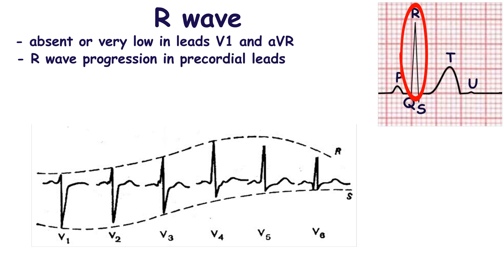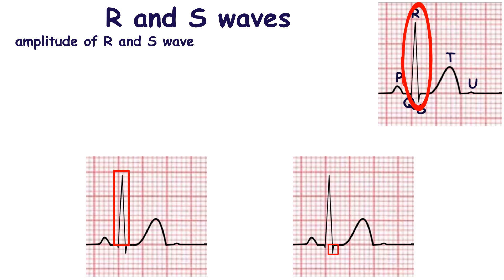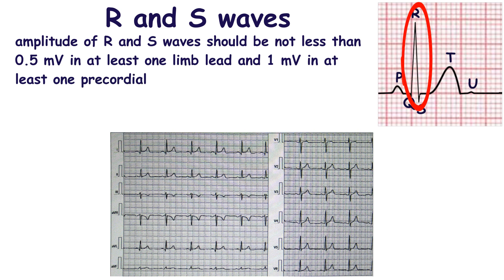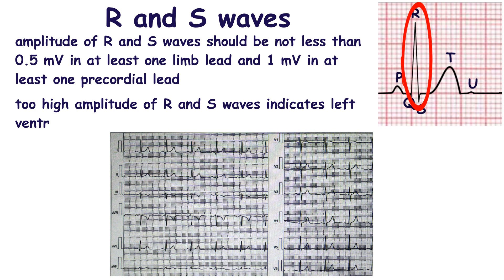Normally, there is R wave progression in the precordial leads. The amplitude of R and S waves should not be less than 0.5 mV in at least one limb lead and 1 mV in at least one precordial lead. Too high amplitude of the R wave indicates ventricular hypertrophy, but it may be found in healthy young athletic people and people over 40 years old. The amplitude of the R wave should not exceed 2 mV in all limb leads and 1.1 mV in AVL. The R wave should not be higher than the S wave in lead V1. The sum of the amplitude of the S wave in V1 and the amplitude of the R wave in V5 or V6 should be less than 3.5 mV.